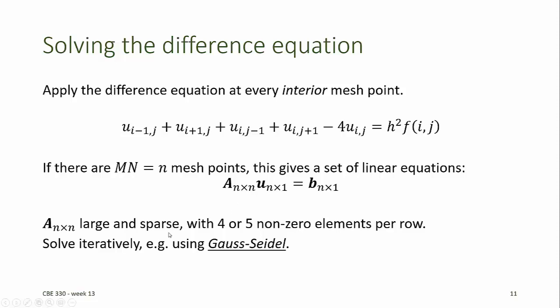Sparse meaning that it has very few non-zero elements. In fact, there will only be as many as five non-zero elements per row, and many rows will contain fewer than five non-zero elements. We'll show that this can be solved iteratively using the Gauss-Seidel method. In order for this to work, A must be either diagonally dominant or symmetric and positive definite.